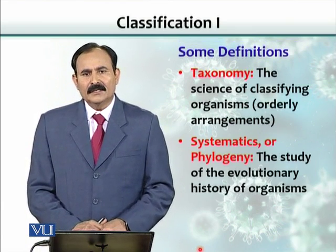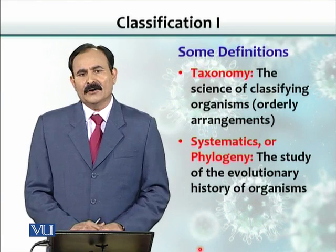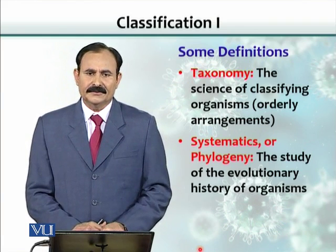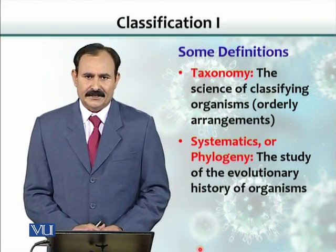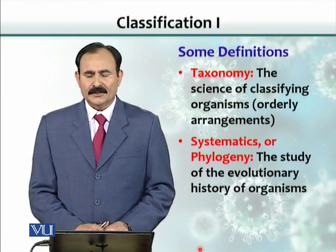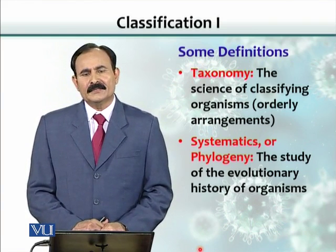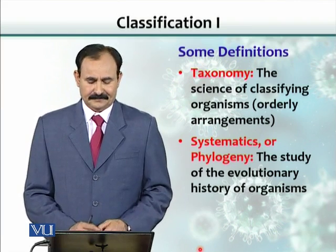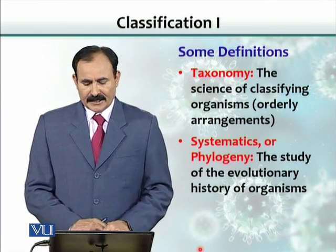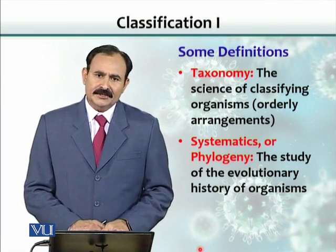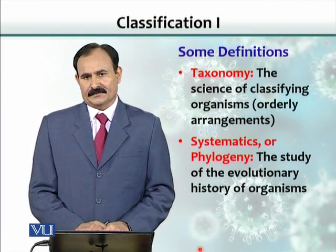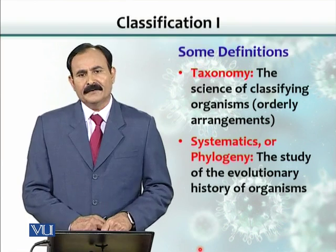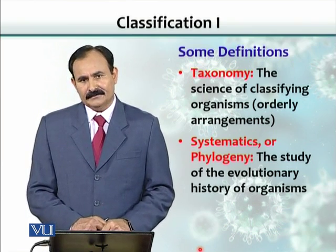Taxonomy is the science of classifying organisms based on their similarities, so those organisms that share similarities are grouped together. The study of the evolutionary history of organisms and how they evolve from each other is called phylogeny, or systematics.